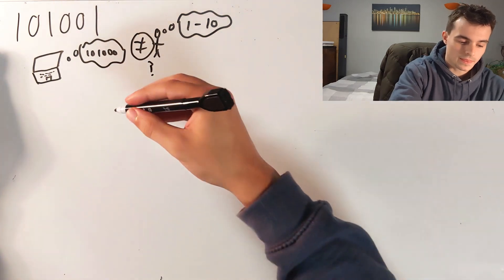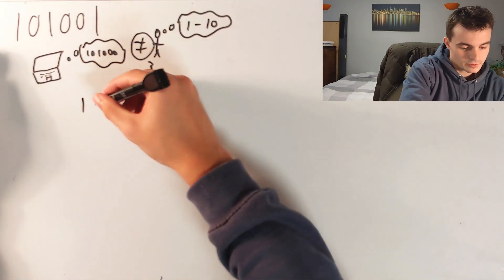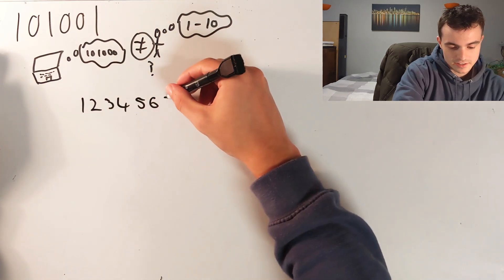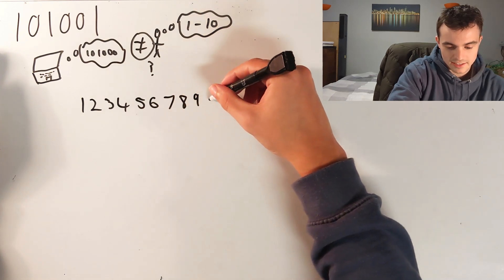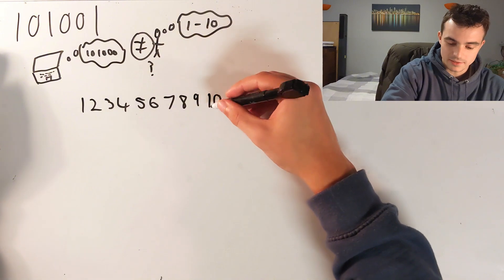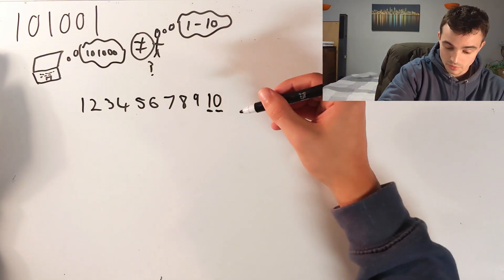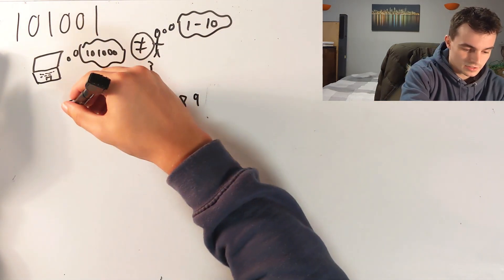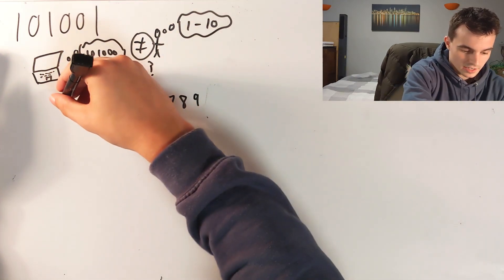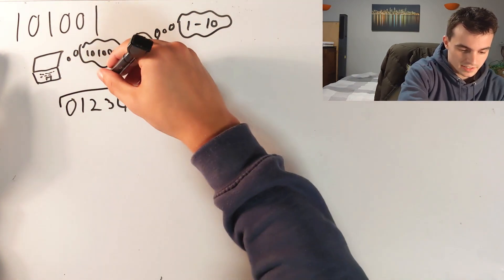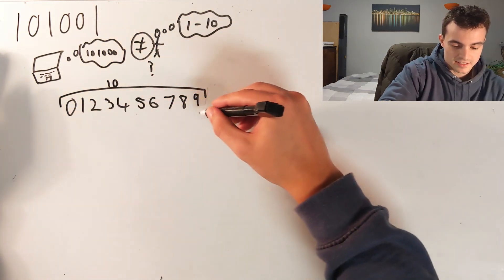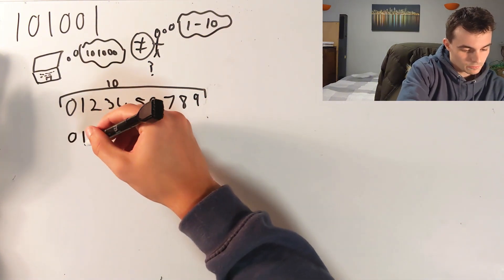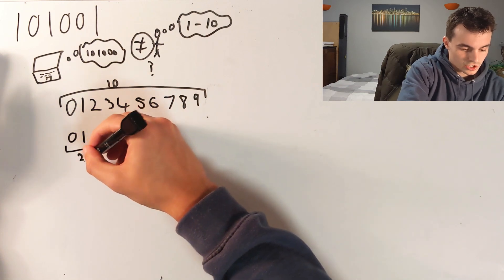Well, one to ten has digits: one, two, three, four, five, six, seven, eight, nine and ten. But actually ten is two numbers. So actually we have zero to nine, and this is ten digits. Binary only has zero and one, so it has two digits.